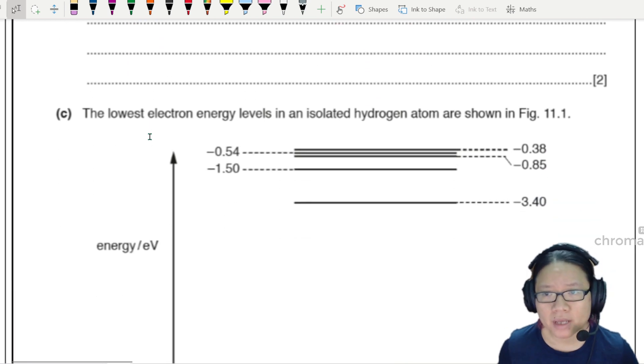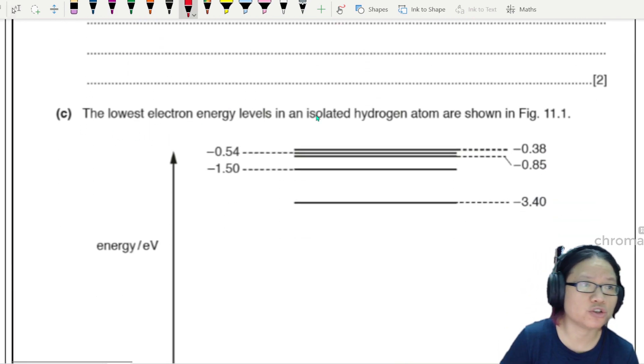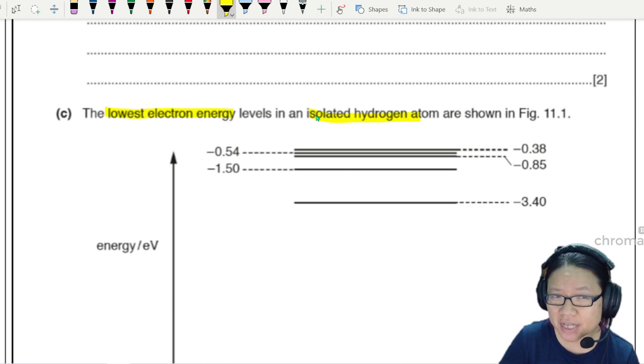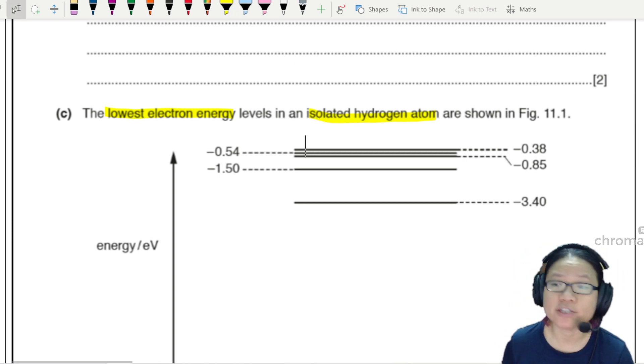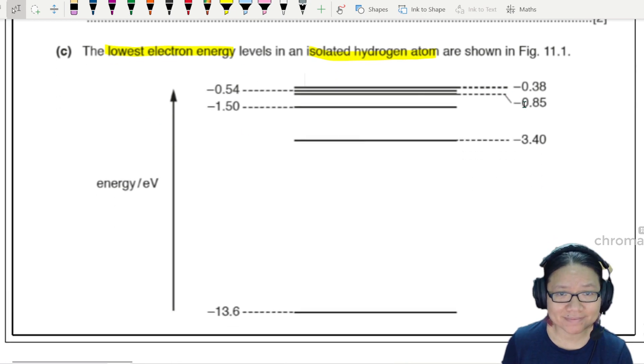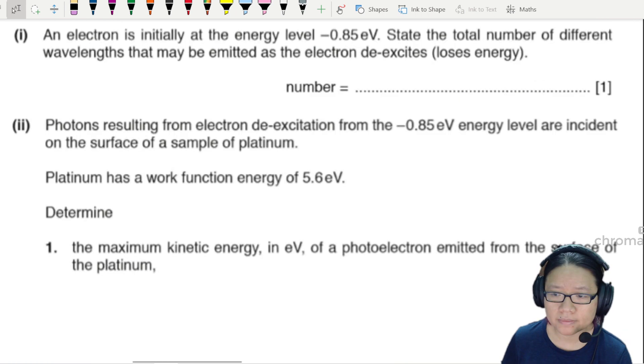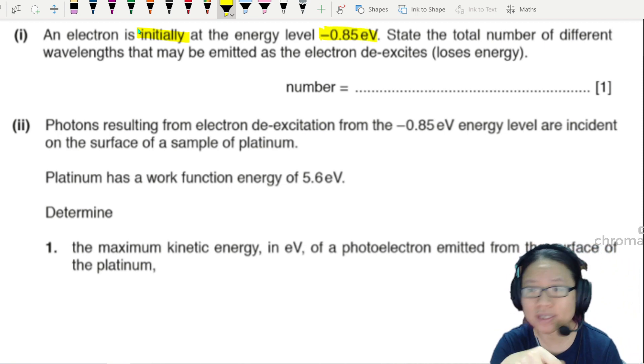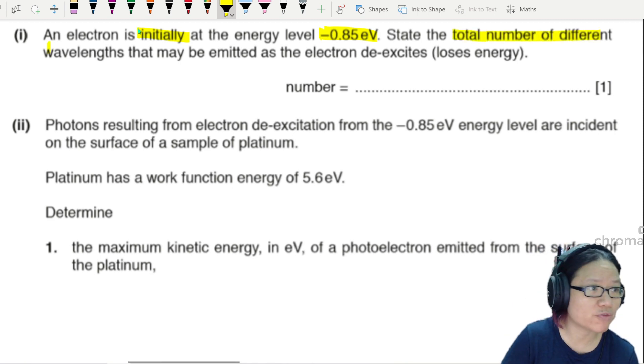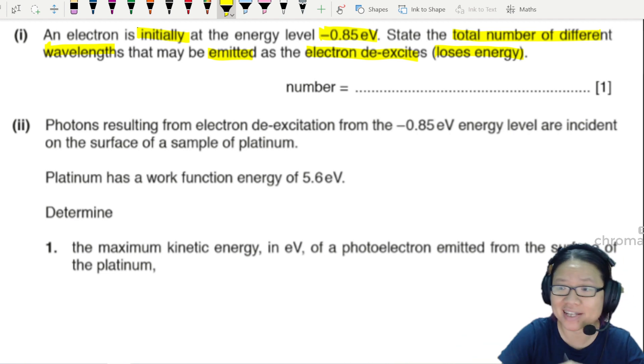Moving on, the lowest electron energy levels in an isolated hydrogen atom. Isolated means the hydrogen atom is on its own, so the energy level is very discrete. Question 1 asks: an electron is initially at energy level negative 0.85 eV. State the total number of different wavelengths that can be emitted as the electron de-excites. The opposite of excite is losing energy. We need to start from negative 0.85.